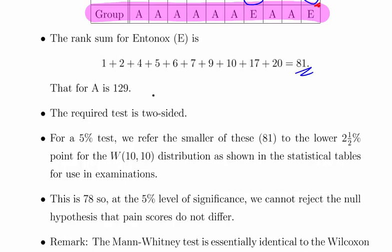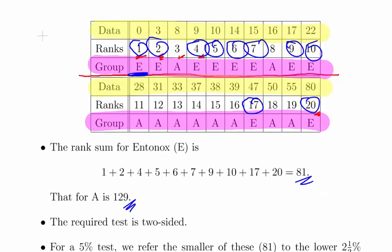If I was to add up all of the ranks for A, it should be 129. I can just calculate them out there, do it the same way. But also, the sum of the ranks should be the sum of 1 all the way up to 20 added up, which is 210. So what is the difference between 81 and 210? It's 129.